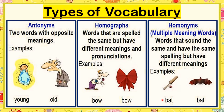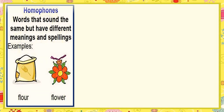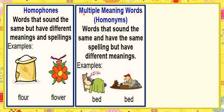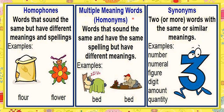The fourth type is homophones — words that sound the same but have different meanings and spellings, like 'flower' and 'flour.' Next, we have multiple meaning words — homonyms — words that sound the same and have the same spelling but have different meanings, for example 'bed.' And the last one: synonyms — two or more words with the same or similar meaning, for example, number, numeral, figure, digit, amount, quantity — different words with different spellings but the same meaning.